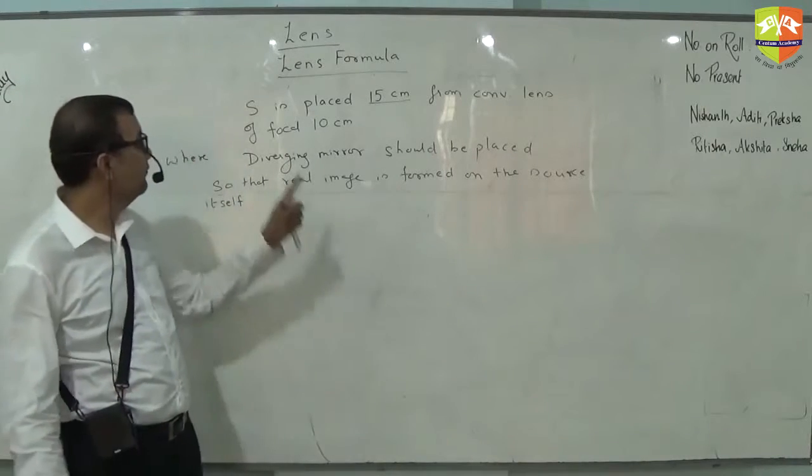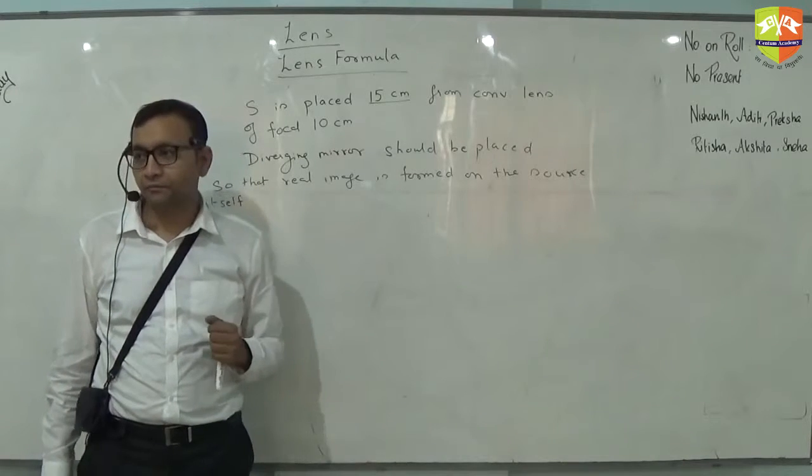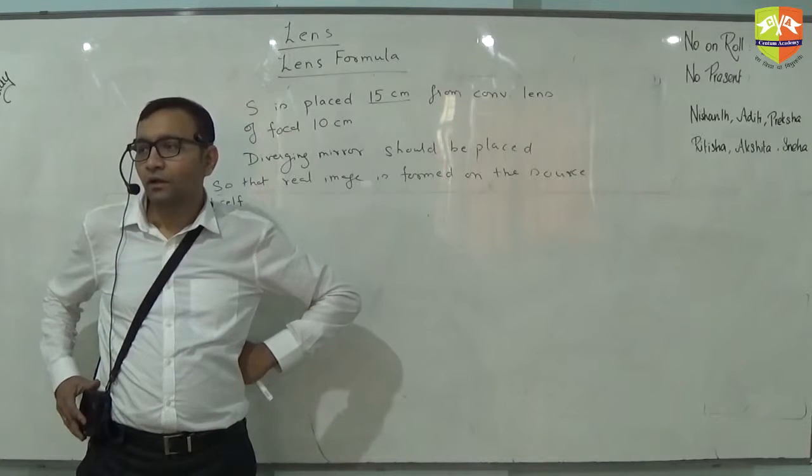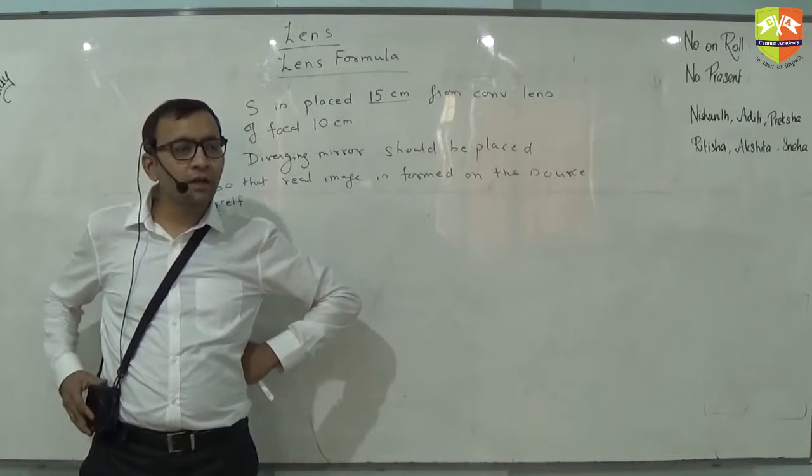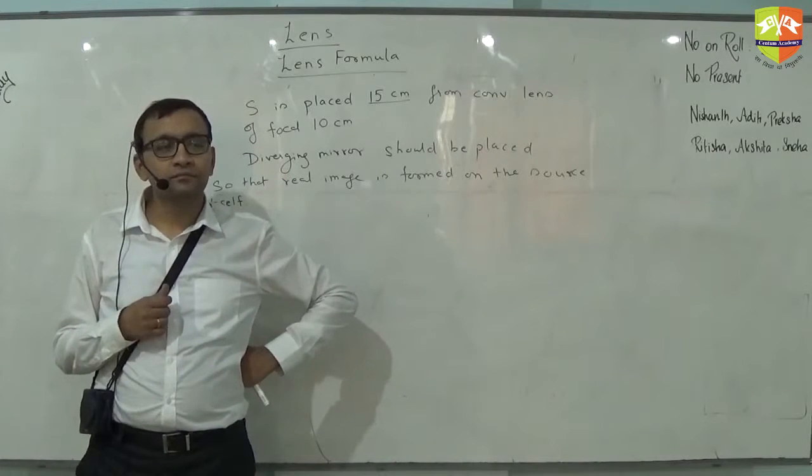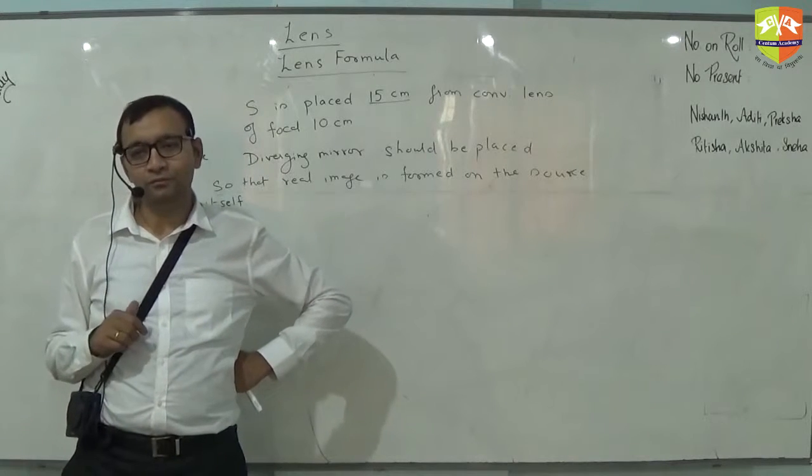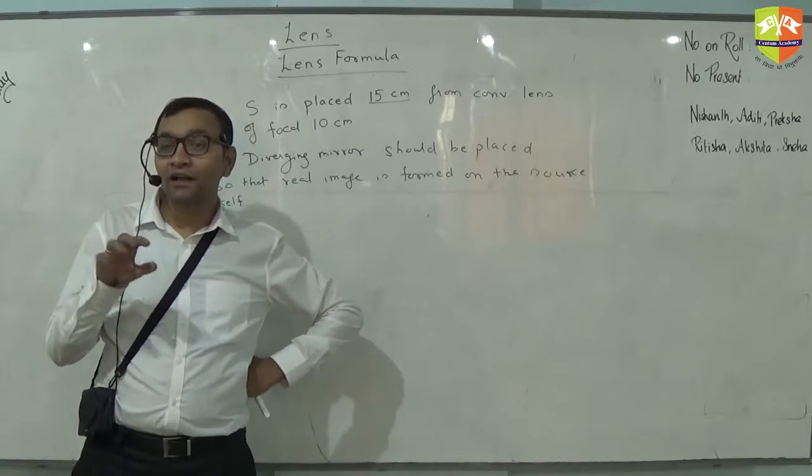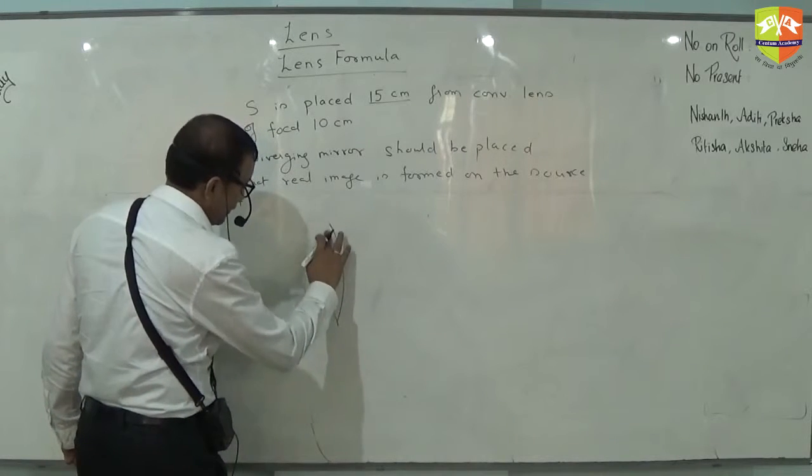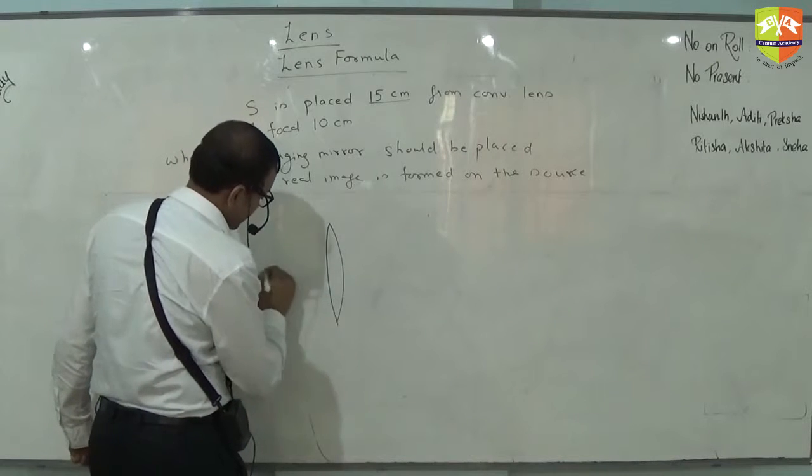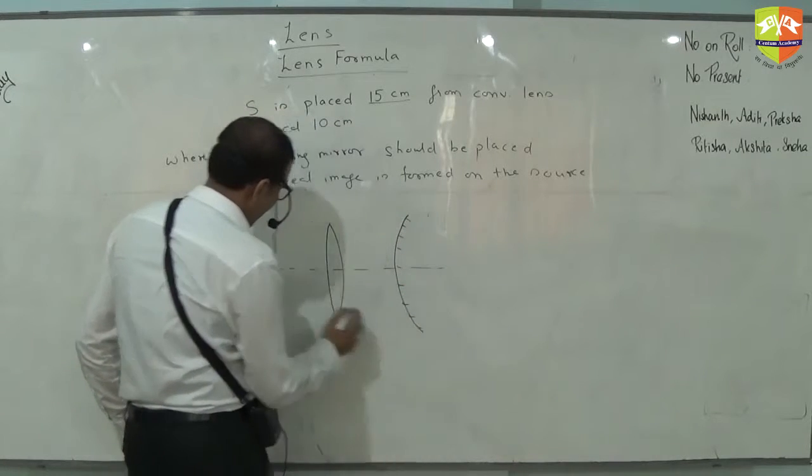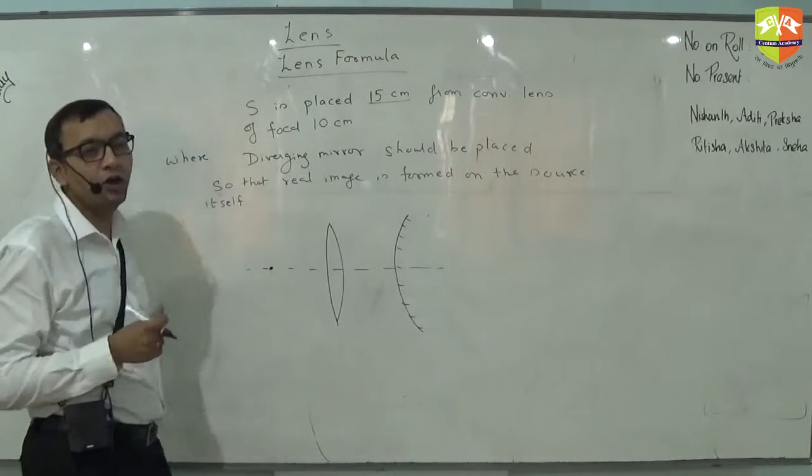Here we have a converging lens and a diverging mirror. What kind of lens is it? We have a convex lens and convex mirror. Convex mirror diverges, convex lens converges. So the situation is something like this - you have a convex lens and you have a mirror, and then you have a source here. Can you draw a ray diagram for the situation?